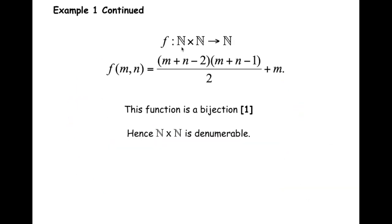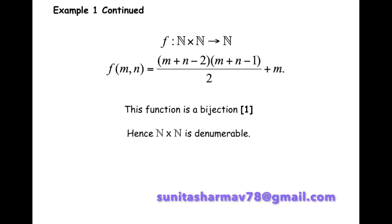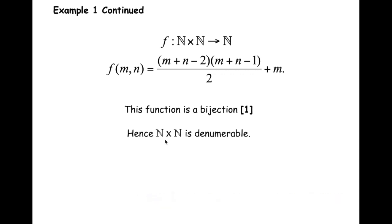We can form a function f from N×N to N such that f(m, n) = (m+n−2)(m+n−1)/2 + m, and this function is a bijection. For the formal proof that this is a bijection you can refer to the reference mentioned at the end, or you may email me. Hence we can conclude that N×N is a denumerable set.